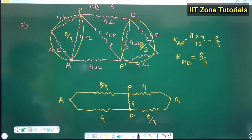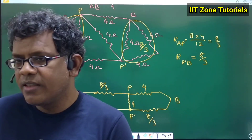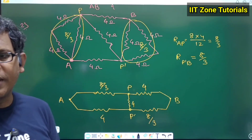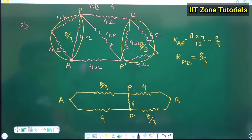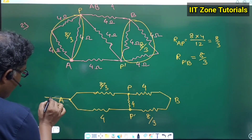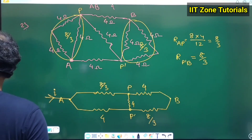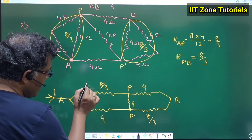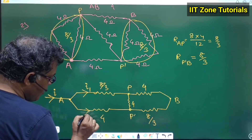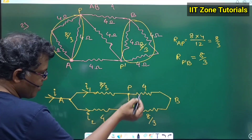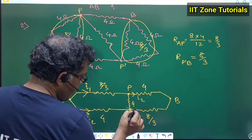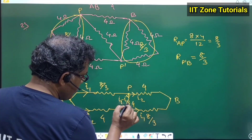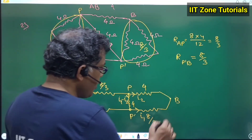This structure links to a known configuration — it is an unbalanced but reversed Wheatstone bridge. We handled a similar structure with capacitors. Since the ratio is reversed, the currents are also reversed: where one branch carries i1, the other carries i2, and the middle branch carries i1 minus i2.